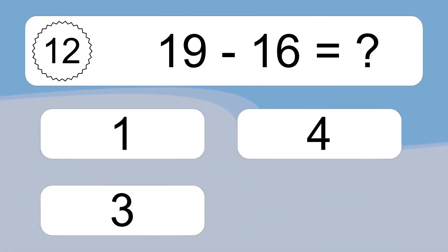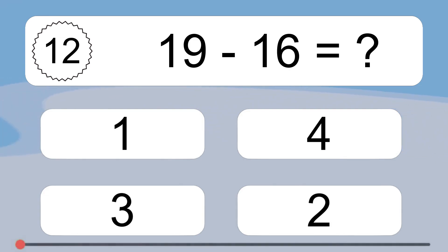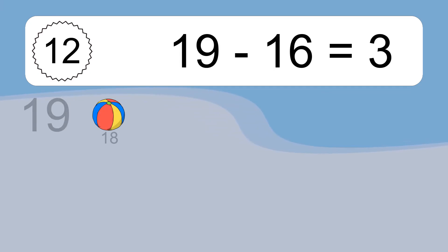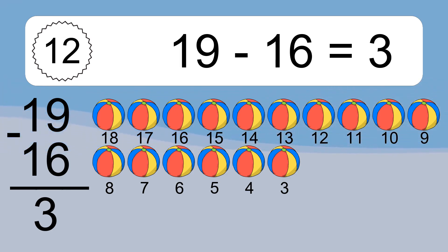19 minus 16 equals what? 19 minus 16 equals 3. Let's count it: 18, 17, 16, 15, 14, 13, 12, 11, 10, 9, 8, 7, 6, 5, 4, 3.